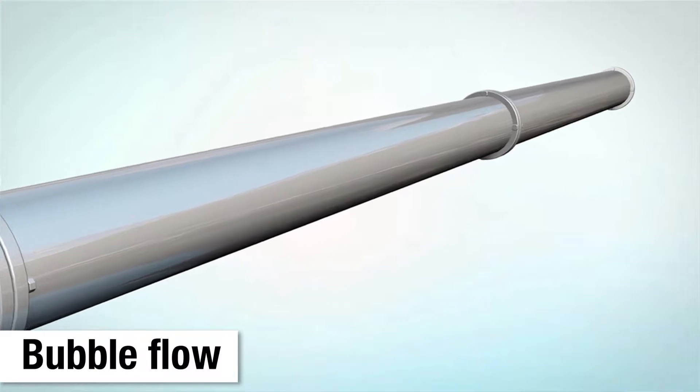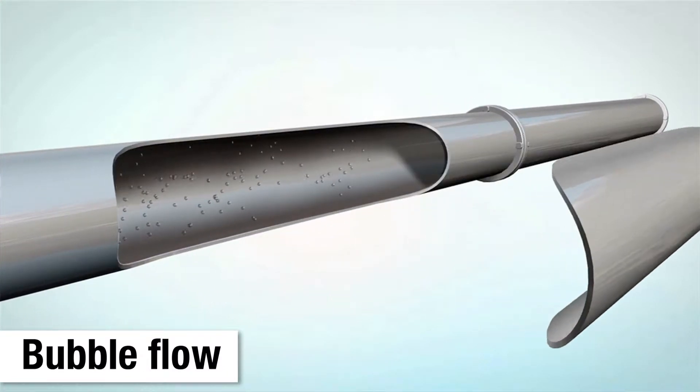Bubble flow is characterized by continuous, distributed bubbles that occur usually when air is added intentionally into a process. For example, in the manufacture of whipped cream or butter.